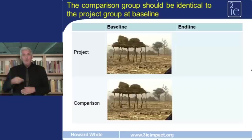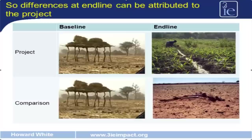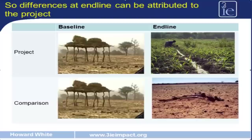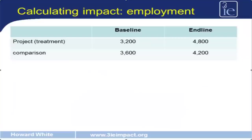We then go at end line, after the project has taken place, and look at the difference in characteristics at that point in time. Any difference we see in outcomes after the project has taken place we say must be attributable to the project, because prior to the project these two areas were, on average, the same. In our electrification example: project areas had baseline employment of 3,200 rising to 4,800, while comparison areas had employment of 3,600 rising to 4,200.